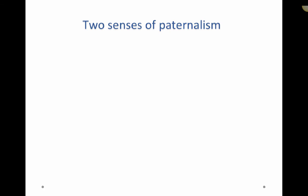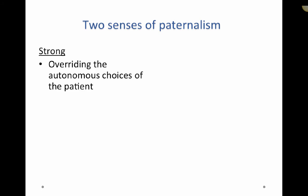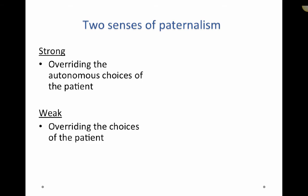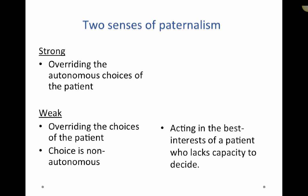There are two senses of paternalism. One is labeled strong paternalism, which involves overriding the autonomous choices of the patient. For example, an elderly man who is at peace with the end of his life and does not desire life-prolonging ventilatory support — despite this autonomous choice, he is intubated by the physicians. On the other hand, there is weak paternalism, where one overrides the choices of the patient, but in this case the choice is non-autonomous — the patient lacks the capacity to decide. In this case, one is acting in the best interest of a patient who lacks capacity.